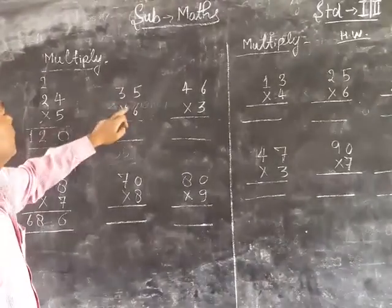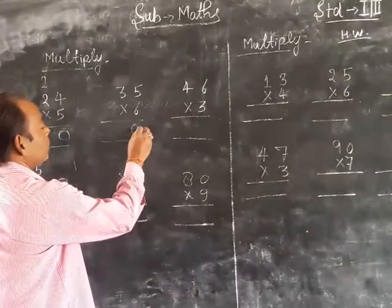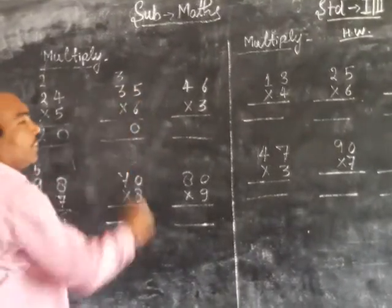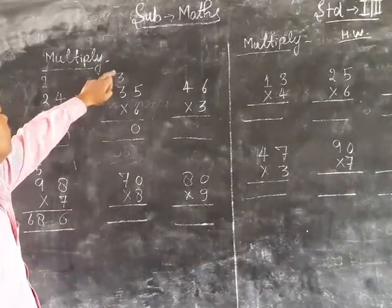Next, 55 x 6. 6 x 5 is 30, write 0, carry 3. 6 x 5 is 30, plus 3 is 33. Answer: 330.